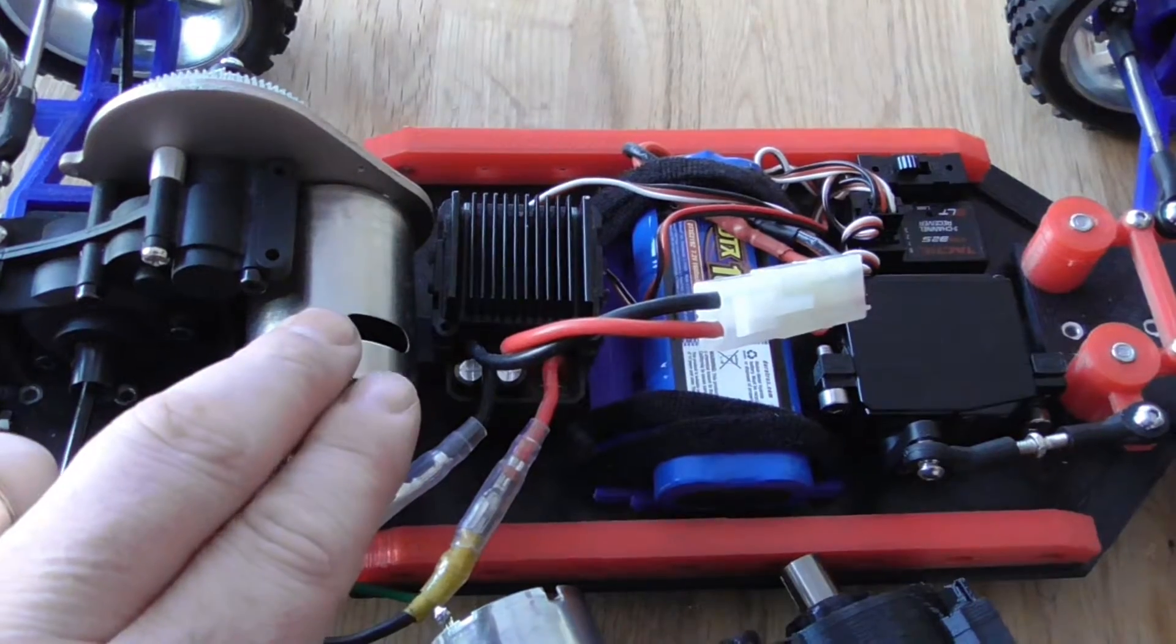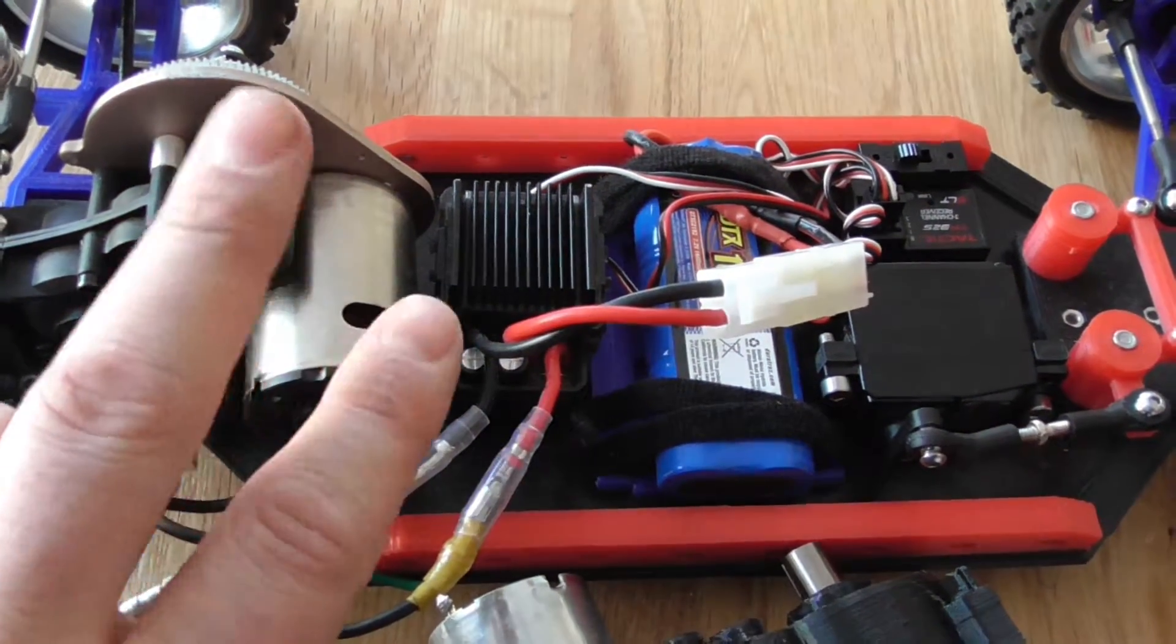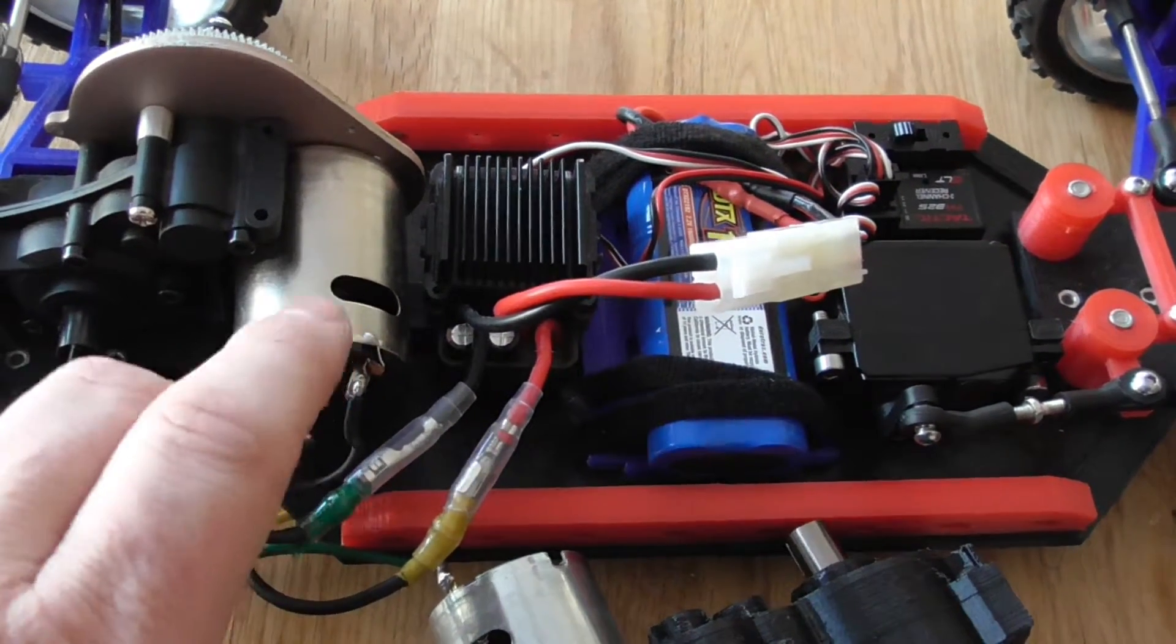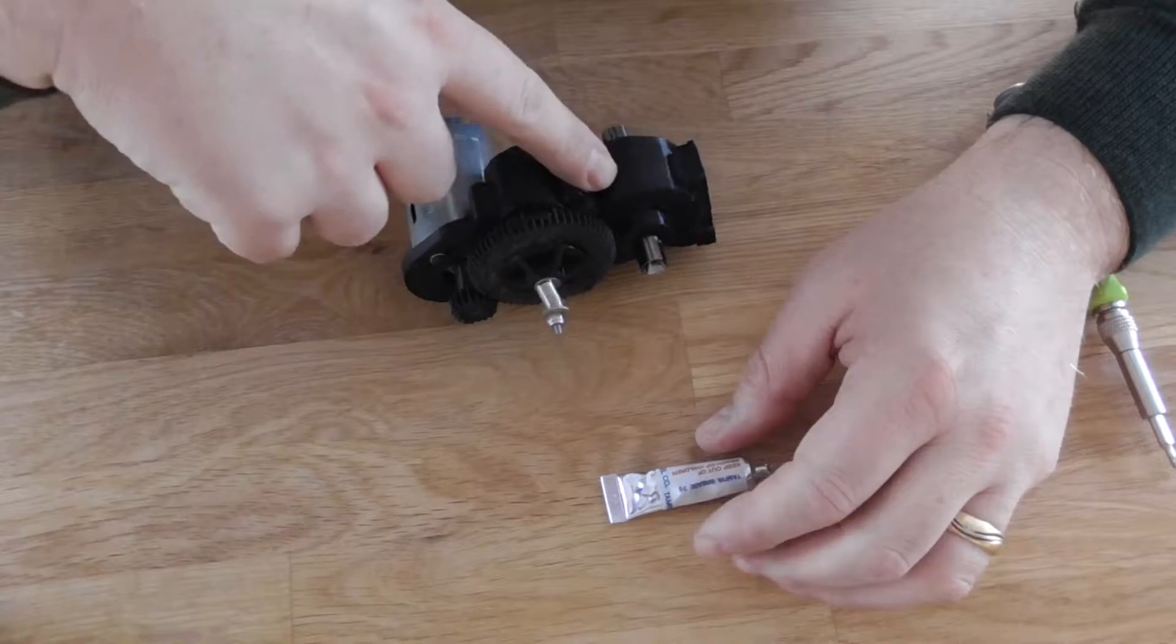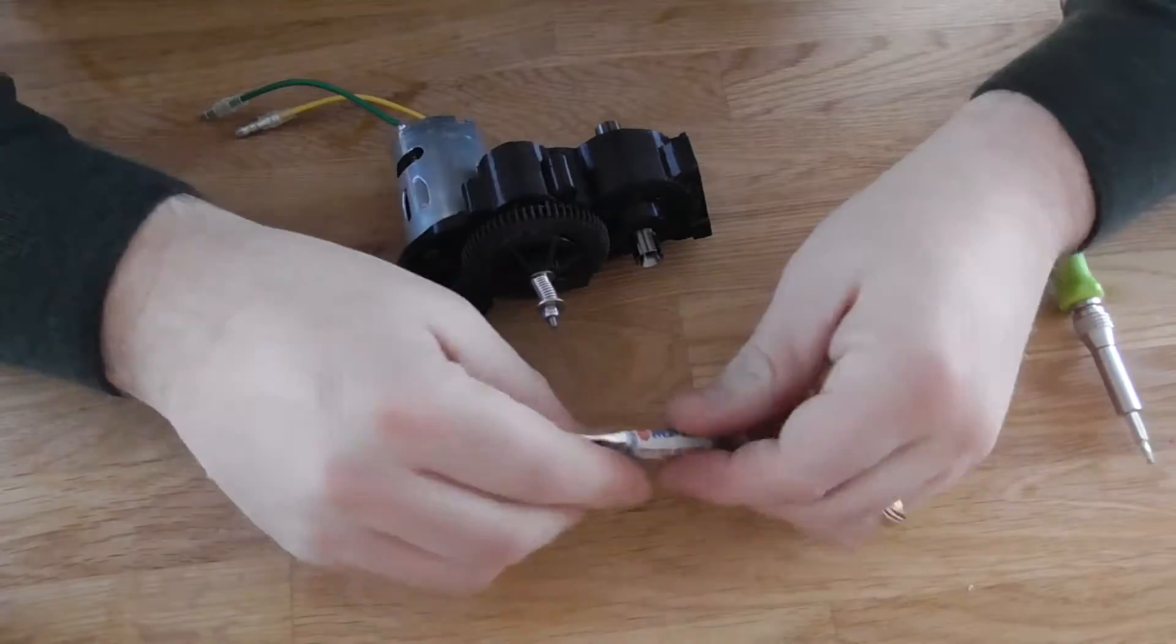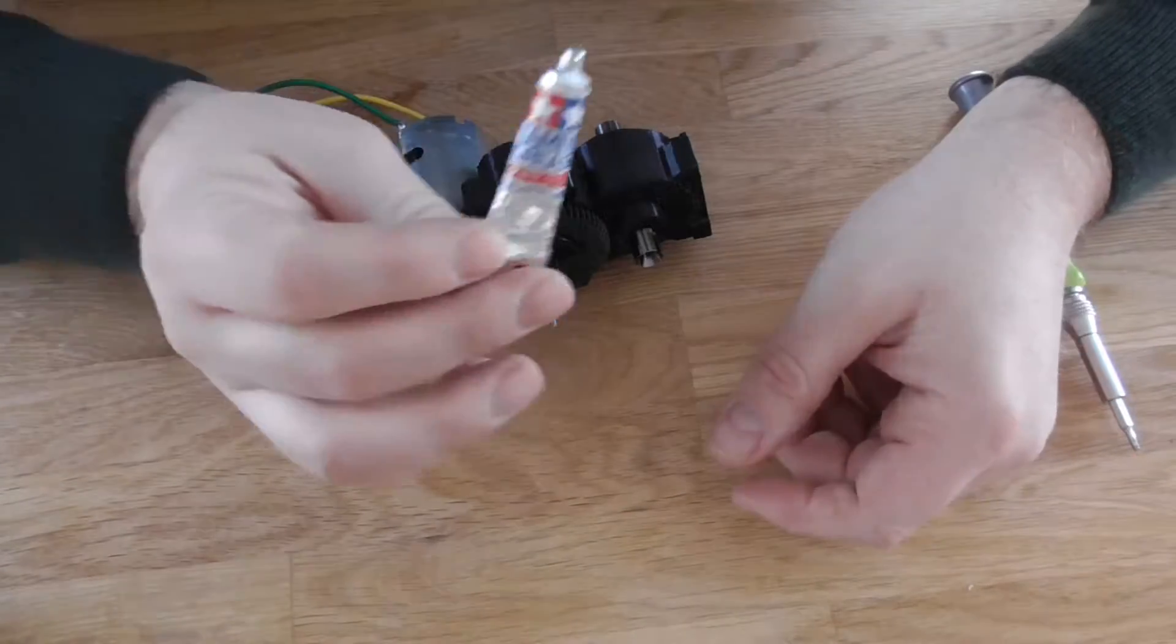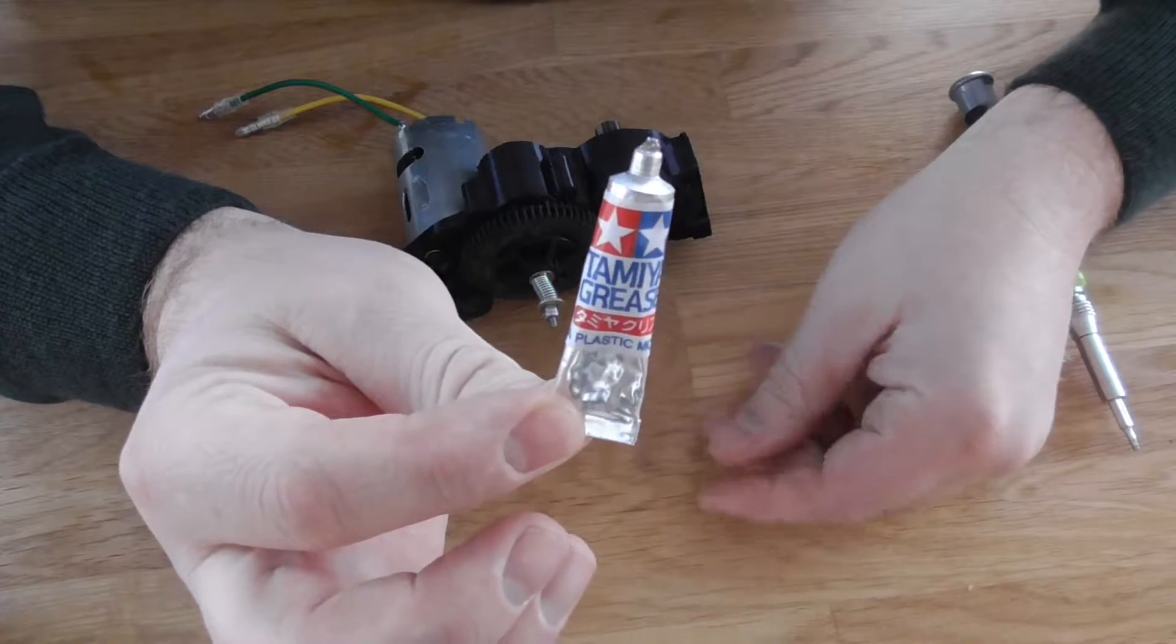This is actually the motor out of my first ever RC car. This motor comes out of a 1986 Tamiya Boomerang, so it's now 31 years old. And so I promised that I would show the gearbox off when I lubricated it.